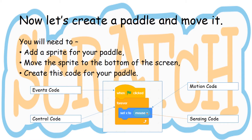Now let's create a paddle and move it. You will need to add a sprite for your paddle. Move the sprite to the bottom of the screen and create this code for your paddle. We'll need events code again, control code, motion code and a little bit of sensing code.